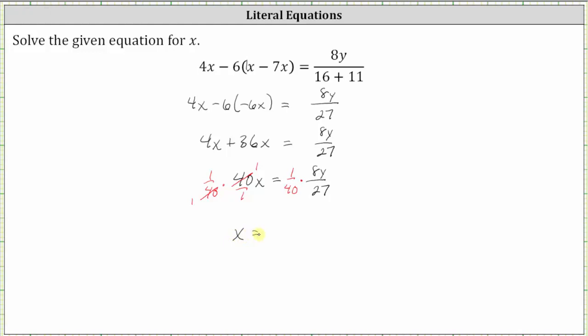On the right before multiplying, notice how we have a common factor of eight between the numerator and denominator. To show this, let's write 40 as five times eight, giving us one over five times eight, times 8y divided by 27.